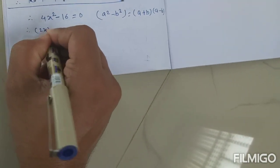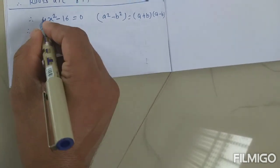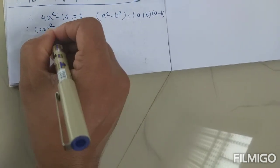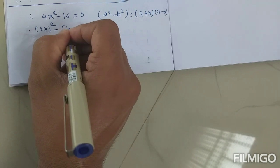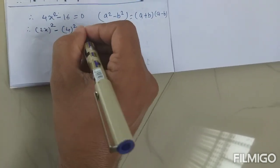a² means 2x bracket square. 2² is 4 and x² is x². Minus this written as 4². 4² is 16, is equal to 0.